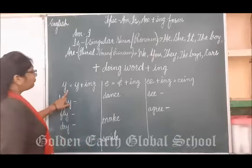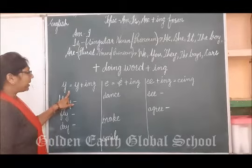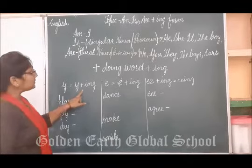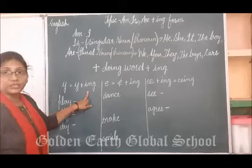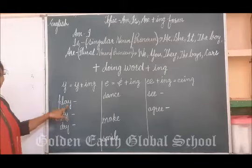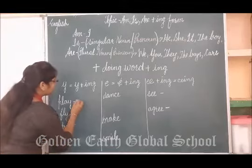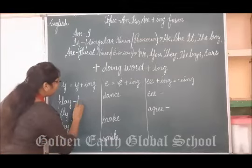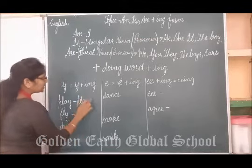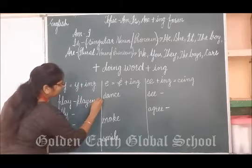When any word ends with Y, we do not remove Y — we simply add -ing with it. For example, play. How will we make it with the -ing form? It will become playing. We will just add -ing with it. Play, playing.